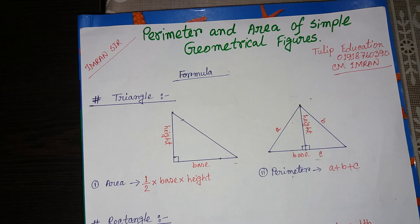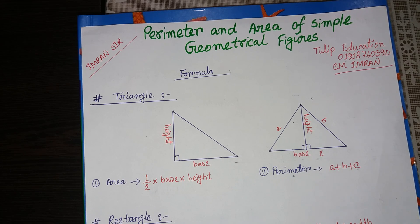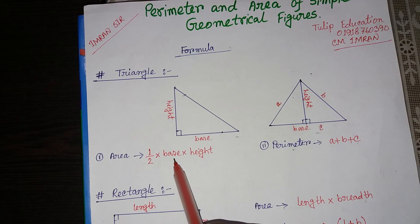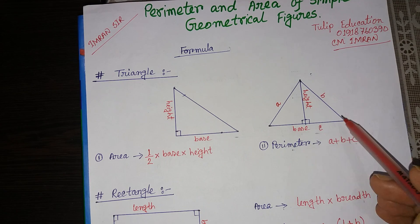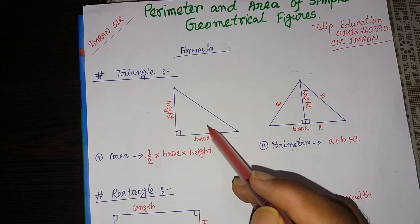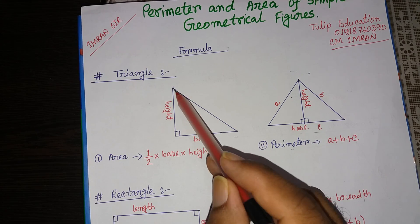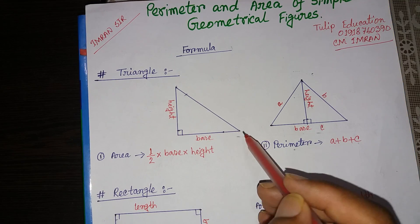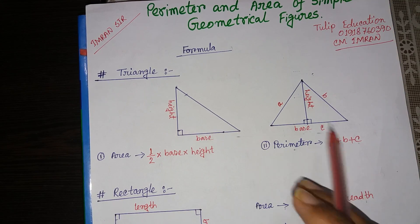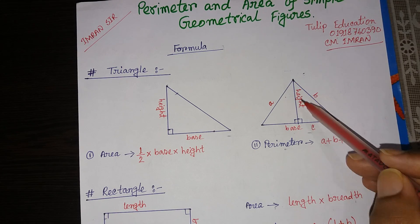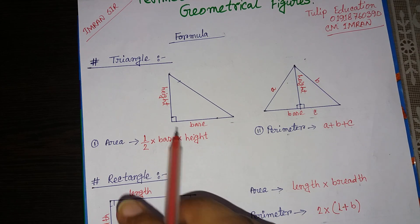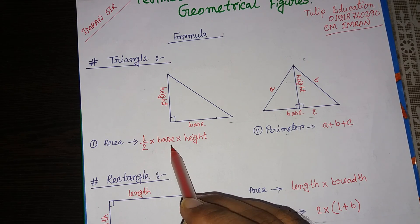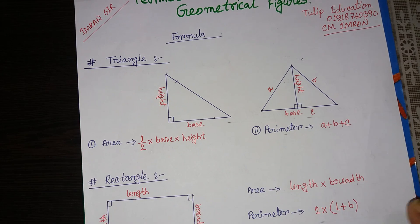First we will discuss the area and perimeter of a triangle. A triangle has three angles and three sides. The area of a triangle is half into base into height. Here I have drawn one triangle. In this triangle, the height goes from this point to this point — this line is called height, and this one is the base.